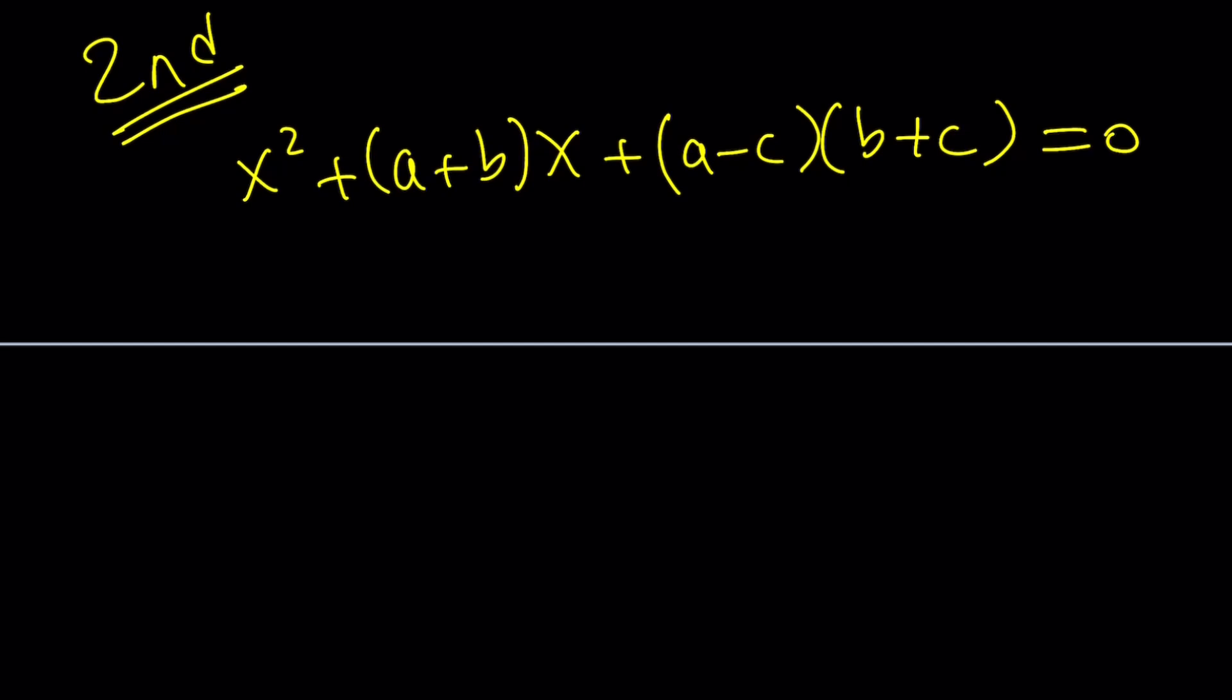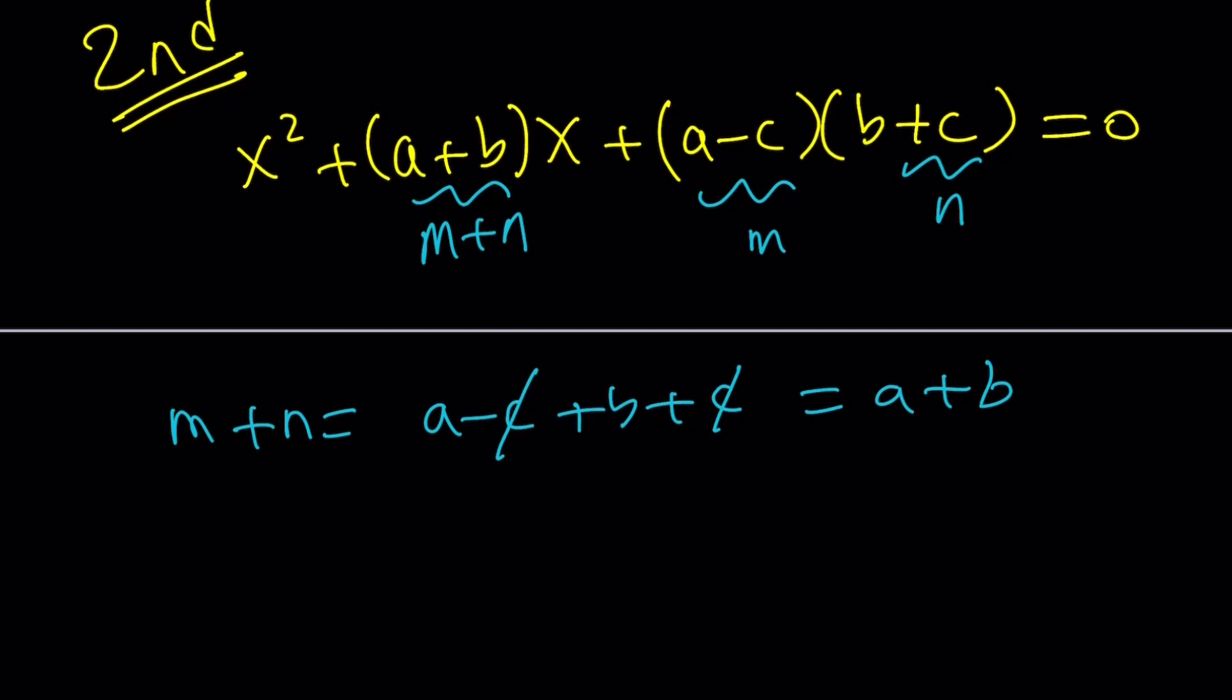So instead of using the quadratic formula—because the quadratic formula gave us something nice—this equation must be factorable. Don't you think? It is factorable indeed. And to factor it, we're going to do the following: we're going to call this m, and we're going to call this n. And what is this going to be? Good question. Notice that if I add m plus n, I get a minus c plus b plus c. c cancels out, and I end up with a plus b. And yes, this is m plus n. In other words, when you're trying to factor a trinomial which is monic—the coefficient of x squared is 1—then you're looking for two numbers whose product is the constant term and whose sum is the coefficient of x. And in this case, we did find those numbers. Those are m and n.